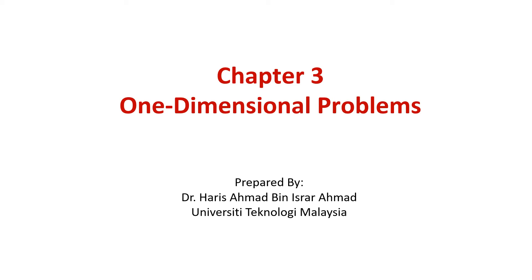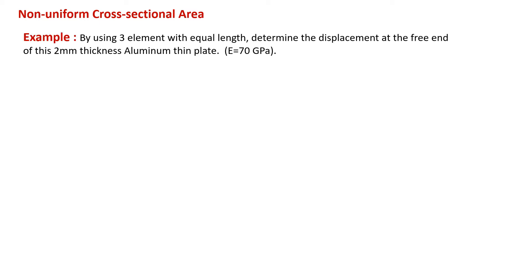The last part in chapter 3: we would like to see when the structure has a non-uniform cross-sectional area. To understand better the non-uniform cross-sectional area problems, let's do an example. Using 3 elements with equal length, determine the displacement at the free end of this 2mm thickness aluminium thin plate. The modulus for this plate is 70 gigapascals.